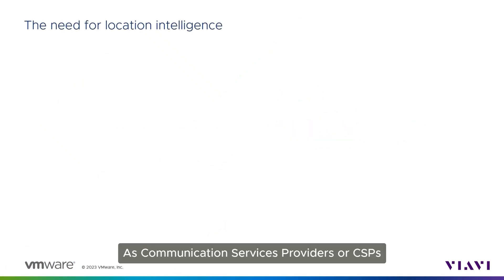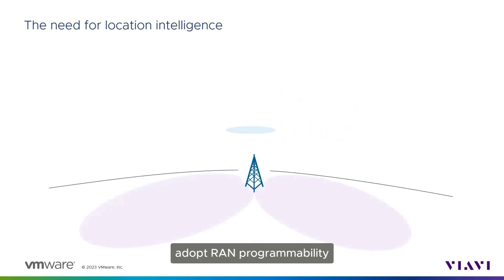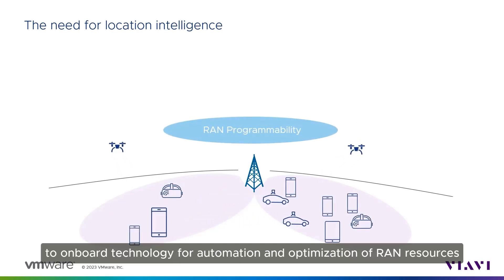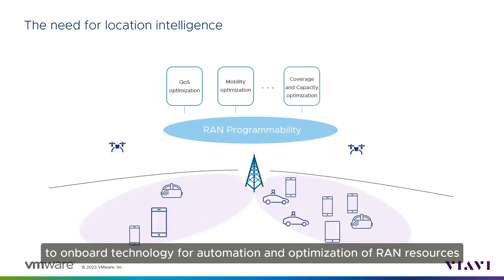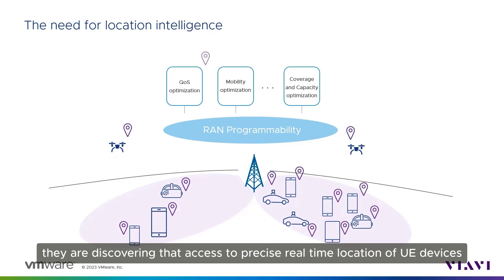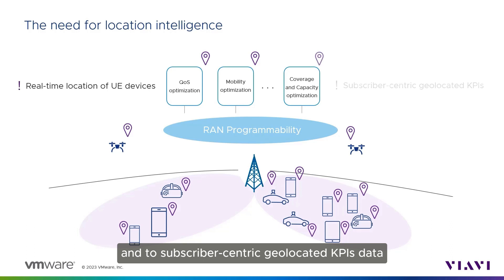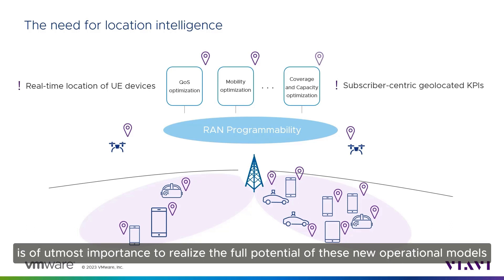As communication services providers, or CSPs, adopt RAN programmability to onboard technology for automation and optimization of RAN resources, they are discovering that access to precise real-time location of UE devices and to subscriber-centric geolocated KPIs data is of utmost importance to realize the full potential of these new operational models.